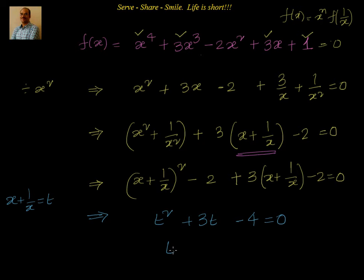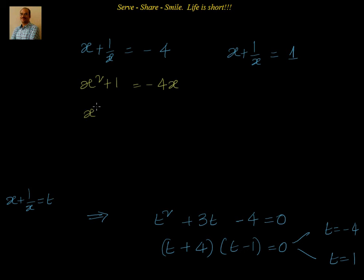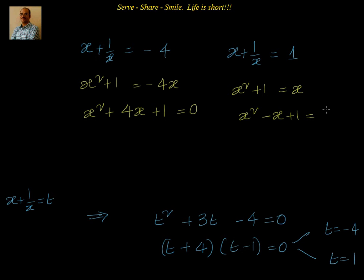Splitting the middle term: (t + 4)(t - 1) = 0, giving t = -4 or t = 1. We have two values for t, and since t = x + 1/x, this gives us x + 1/x = -4 and x + 1/x = 1. These are quadratic equations: x² + 4x + 1 = 0 and x² - x + 1 = 0.